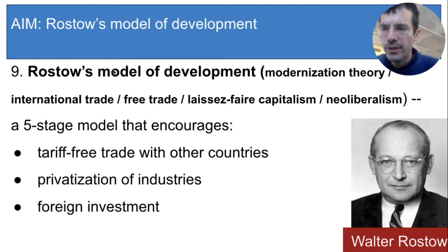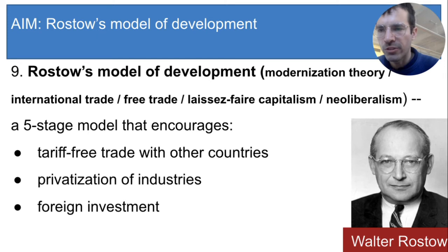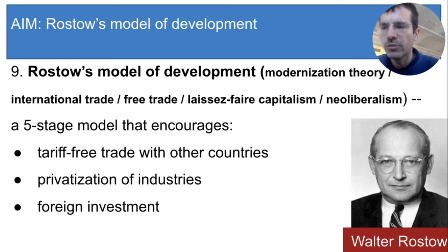Third, foreign investment. That means that developing countries should let multinational corporations, which are based in other countries, come in and buy land for plantations, open up factories, or open up stores. This is yet another contrast with self-sufficiency, because in the self-sufficiency model countries were trying to keep foreigners out and encourage people to buy domestic products. But Rostow's model is telling LDCs to let foreign companies come and use their money to build businesses in that country.